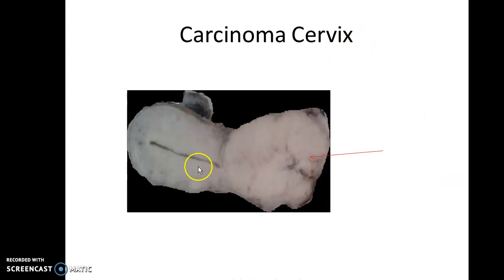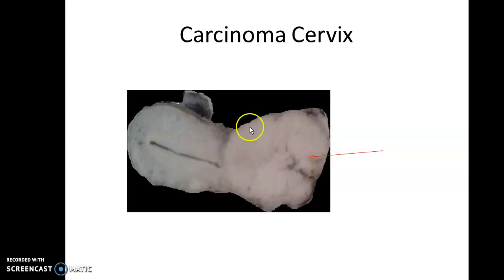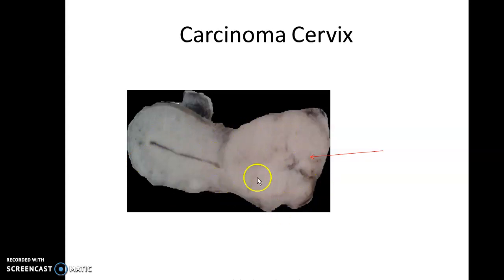If you imagine this is the uterus, this is the endometrial cavity, and this is the cervix — the part in between the uterus and the cervix is called the isthmus. So this growth is extending upwards into the isthmus.